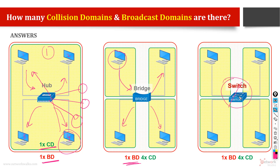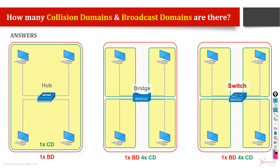But if it is a router — let us say this device is a router — when this device wants to send a message, the router will only forward to the correct destination, the layer 3 destination. This is the difference between a broadcast domain with a switch versus a router.